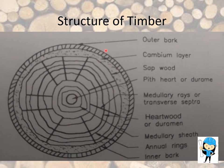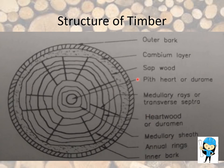To recap the functions: Bark protects and prevents the timber from external harm. Sapwood contains large moisture and is liable to quick decay. Medullary rays store food and distribute it to the various parts of the tree. Heartwood is dead wood and does not take part in the growth of the tree. The medullary shell protects the pith, which is the center layer of the tree containing only cellular tissues.